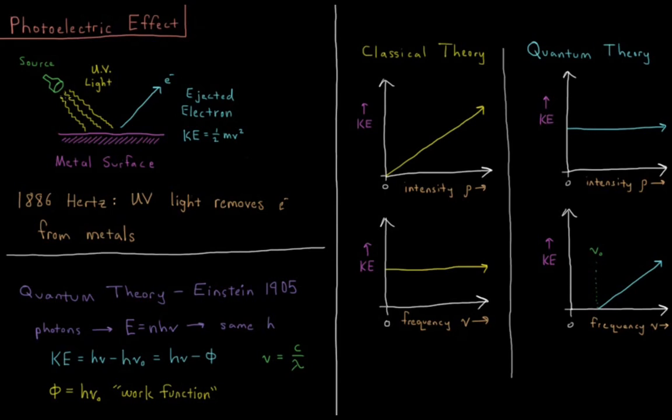Classical theory also predicted that the frequency of the light wouldn't make any difference on the kinetic energy of the electron, on how fast the electron gets kicked out. If I change my light from red to green to blue, changing its frequency, this shouldn't change what electrons are getting kicked out. Classical theory says intensity should increase it and frequency should not change the kinetic energy.